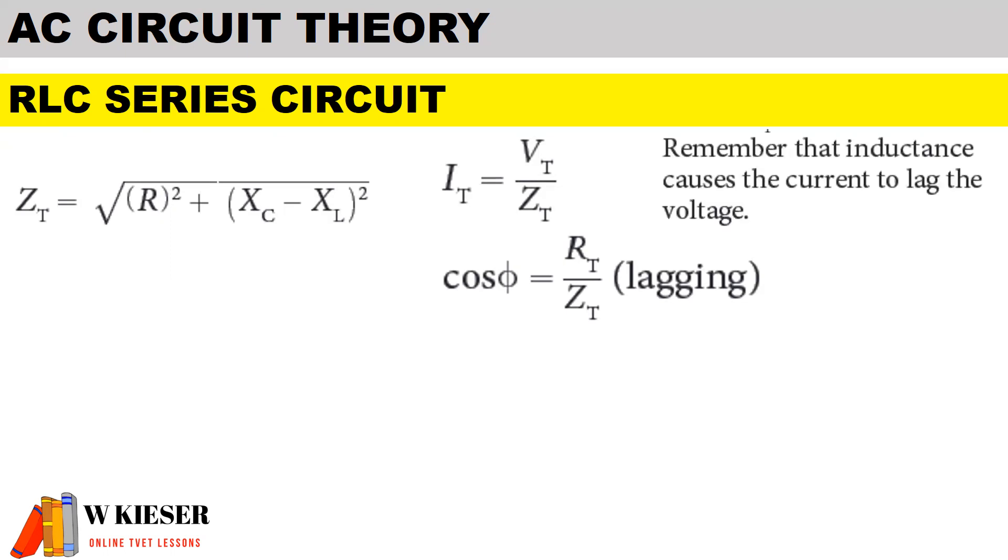Remember that inductance causes current to lag the voltage, however capacitance will cause current to lead the voltage. Now in a series RLC circuit voltage is divided, therefore to calculate the volt drop across each component we will multiply by the current and current remains the same. So you'd have to determine the inductive reactance and the capacitive reactance first.